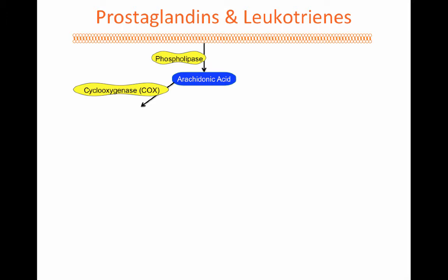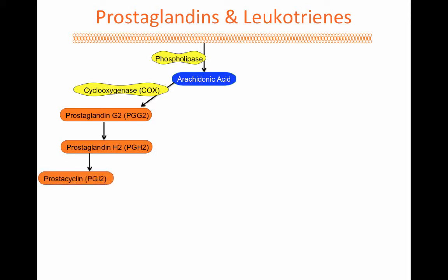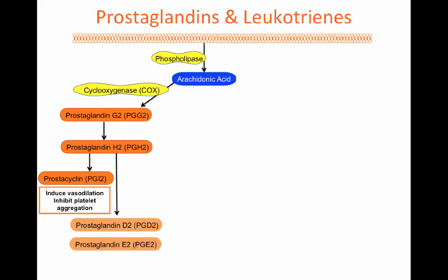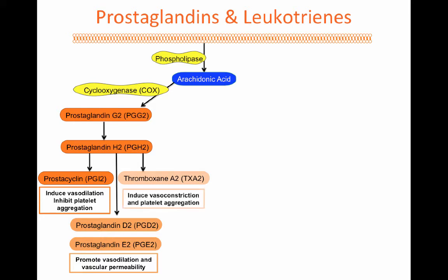Cyclooxygenase can cleave arachidonic acid to generate the first prostaglandin, prostaglandin G2. Different synthetase enzymes can generate other prostaglandins such as H2. Prostaglandin H2 can generate prostacyclins, which induce vasodilation and inhibit platelet aggregation. In addition, prostaglandin H2 can lead to generation of prostaglandin D2 and prostaglandin E2, both of which promote vasodilation and vascular permeability. Finally, prostaglandin H2 can also generate thromboxane A2, which induces vasoconstriction and platelet aggregation.